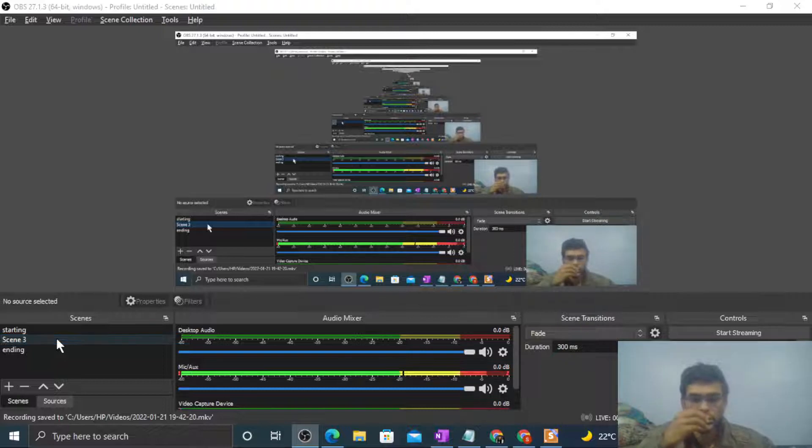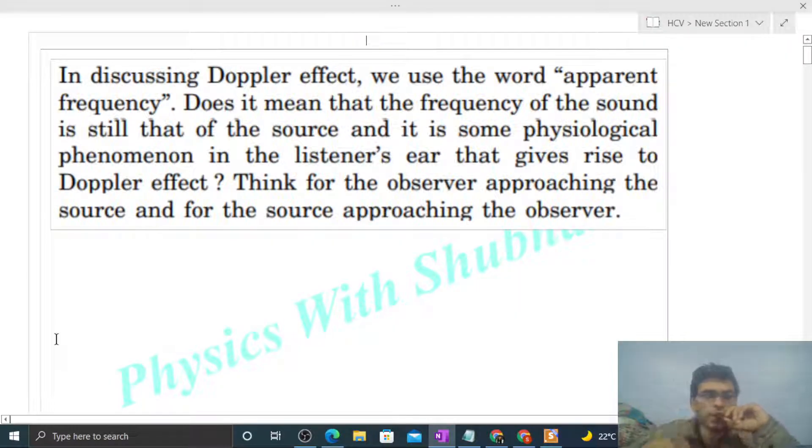Okay hi everyone, today let's discuss an interesting problem. In discussing Doppler effect, we use the word 'apparent frequency'. Does it mean that the frequency of the sound is still that of the source and it is some psychological phenomenon in the listener's ear that gives rise to Doppler effect? Think for the observer approaching the source and for the source approaching the observer.